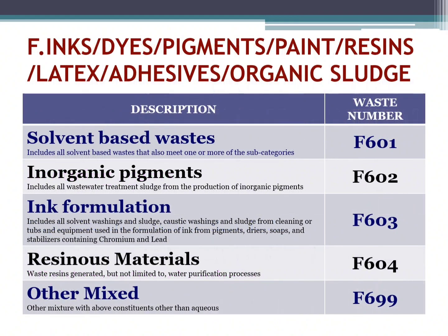The next category is for inks, dyes, pigments, paints, resins, latex, adhesives and organic sludge. Solvent-based waste: includes all solvent-based waste that meet one or more of the subcategories. Waste number F601. Inorganic pigments: includes all wastewater treatment sludge from the production of inorganic pigments. Waste number F602.